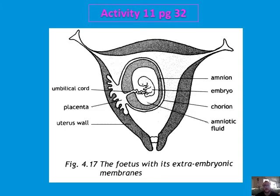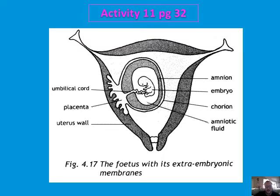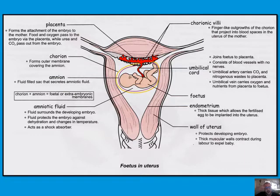In last year's final exam they asked you to draw a line showing where the umbilical cord goes, so don't get caught out — it goes from the belly of the developing embryo directly to the placenta. Note where it starts and ends. After drawing that, add all of the labeled structures, as a lot of it is repetition but important to review. The chorionic villi are finger-like outgrowths of the chorion that project into blood spaces in the uterus of the mother.